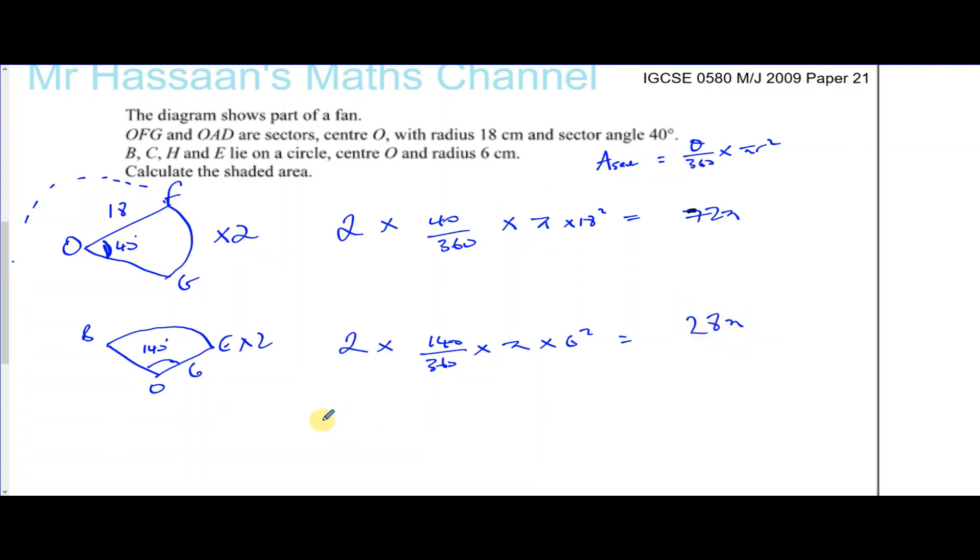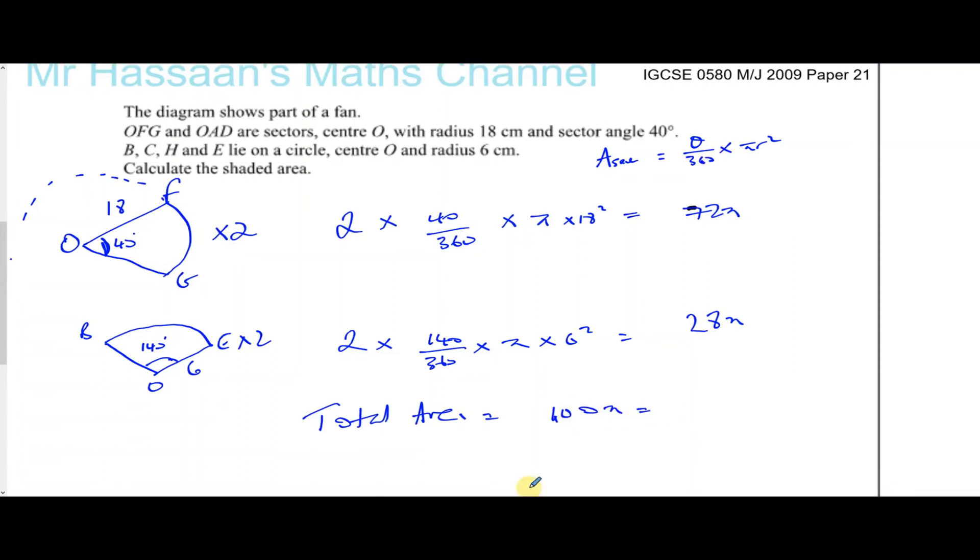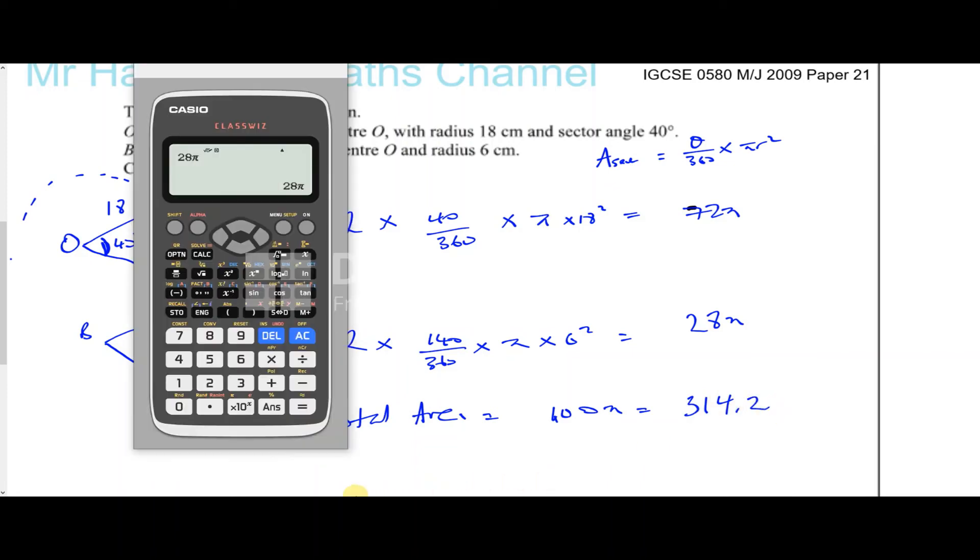The total area is 72π plus 28π, which is 100π. And 100π equals 314.2. Let's just make sure: 28π plus 72π—that's 100π.